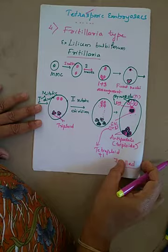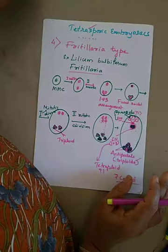In the next class, we will study another type of embryo sac — the plumbagella type.